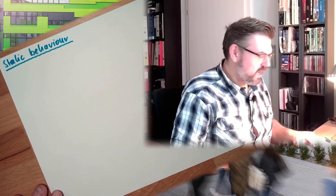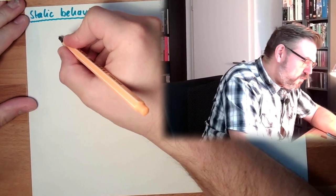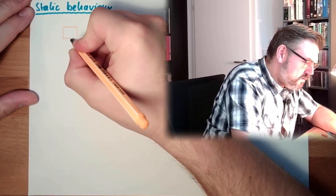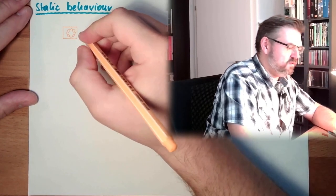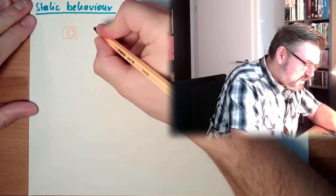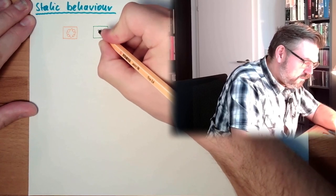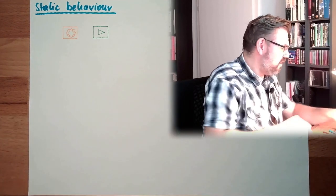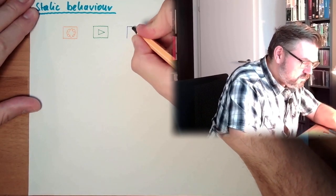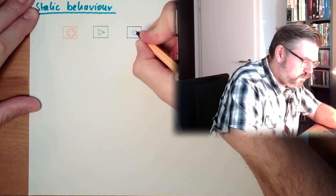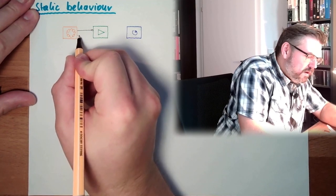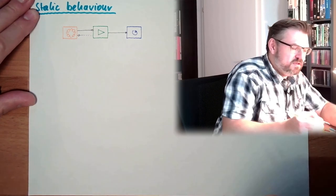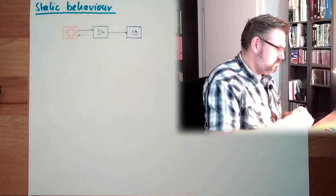Let's talk about the static behavior of a measurement system. We talked about how a measurement system looks and how it is built. We have somewhere a sensor — I'll draw here the typical symbol, the Wheatstone bridge. Then we need an amplifier, and then we have a sampler and a displayed value. Here we have some display, and the signal goes to it.